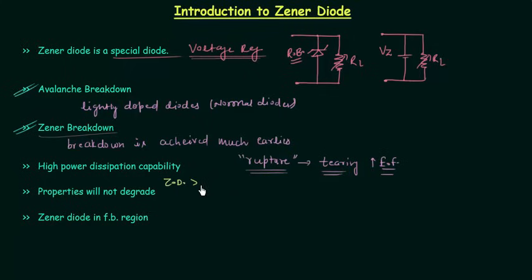Zener diodes have high power dissipation capabilities as compared to normal diodes. When we use a normal diode in reverse bias condition its properties will degrade, but if we use the Zener diode in reverse bias condition the properties will not degrade. Zener diode in forward bias is similar to the normal diode in forward bias. There is no difference between the Zener diode and normal diode in forward bias. The most important use of Zener diode is voltage regulation, and it acts as a voltage regulator when operated in reverse bias, but it can also be operated as a normal diode in forward bias.